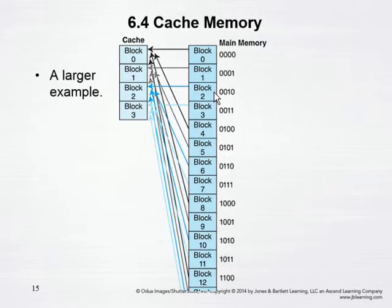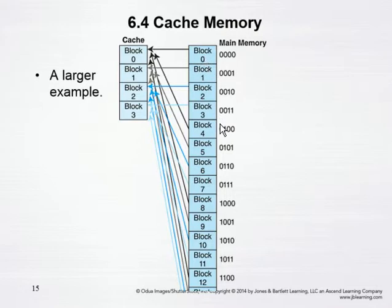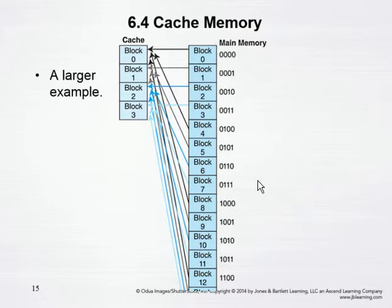There's an example here of more blocks, which is more likely, and it would go on further. The same idea is that every four blocks matches to every four blocks of our cache. So block zero, block four, block eight, block twelve — all of those would map to cache block zero. Whereas block one, block five, block nine, and block thirteen would all map to cache block one, and so on. So it's very organized in how we set up this blocking and the mapping from main memory to cache.